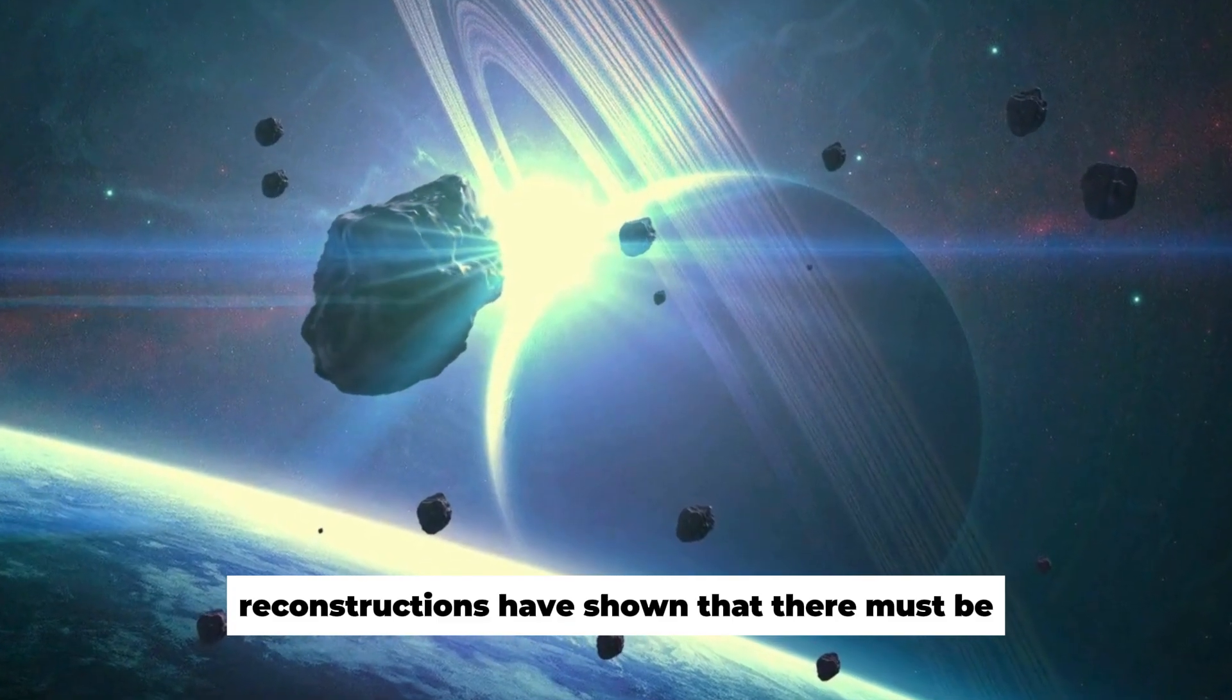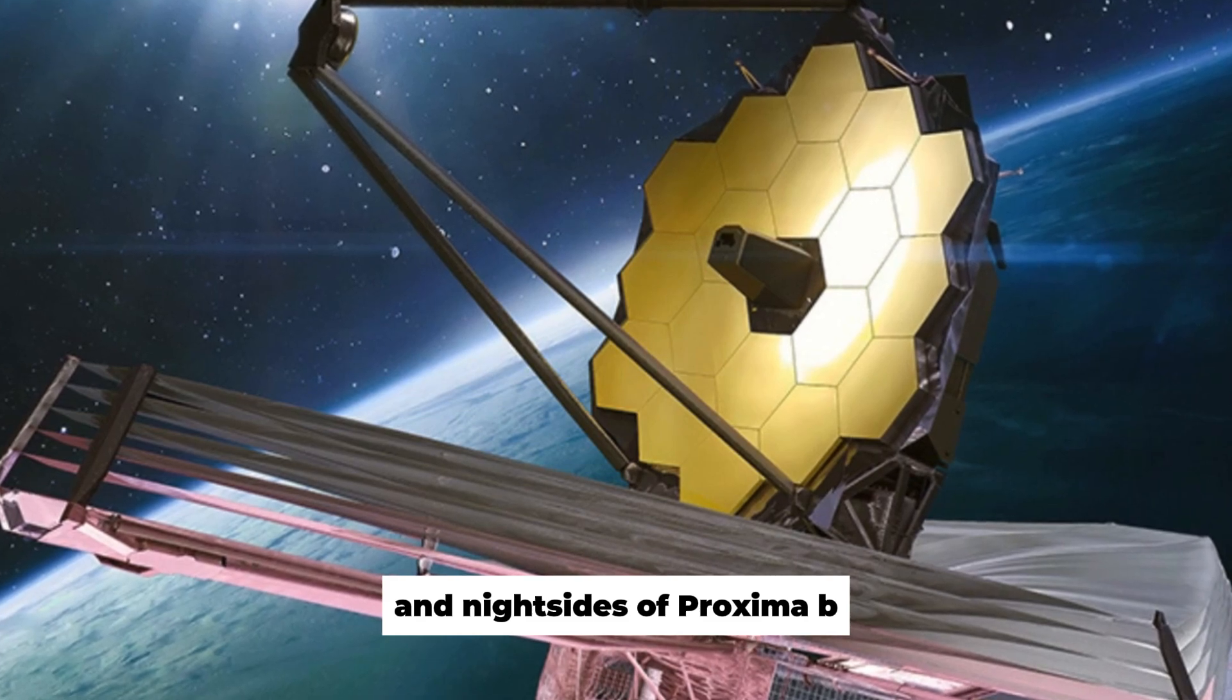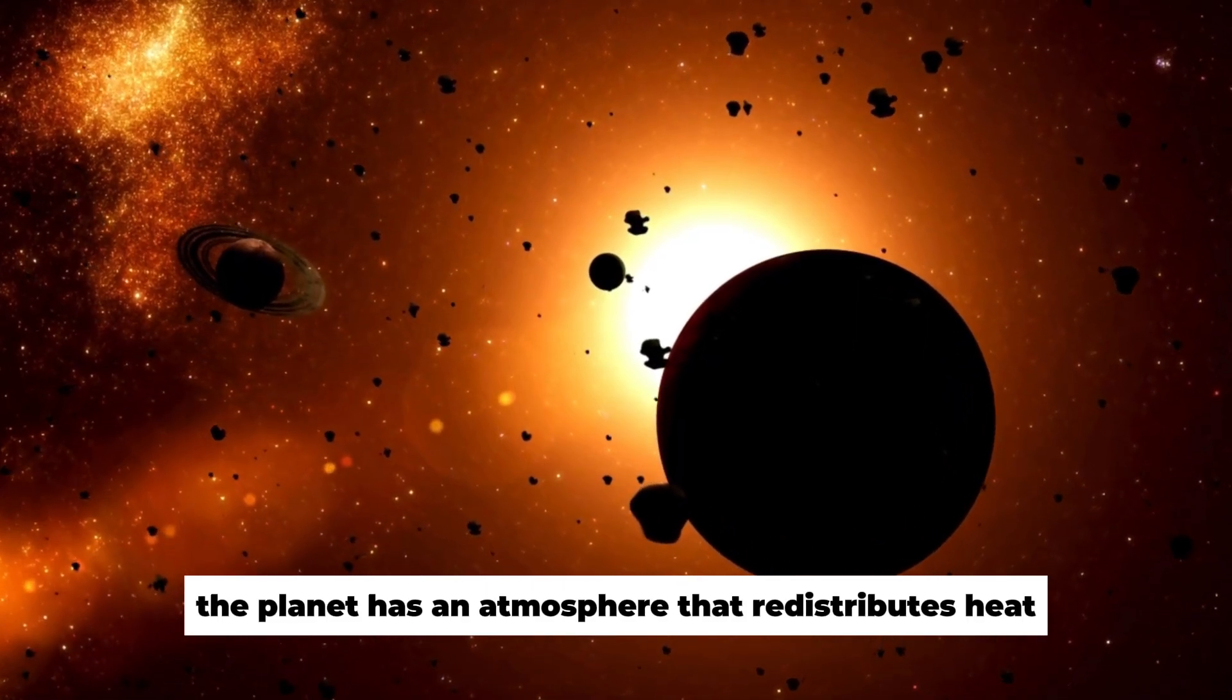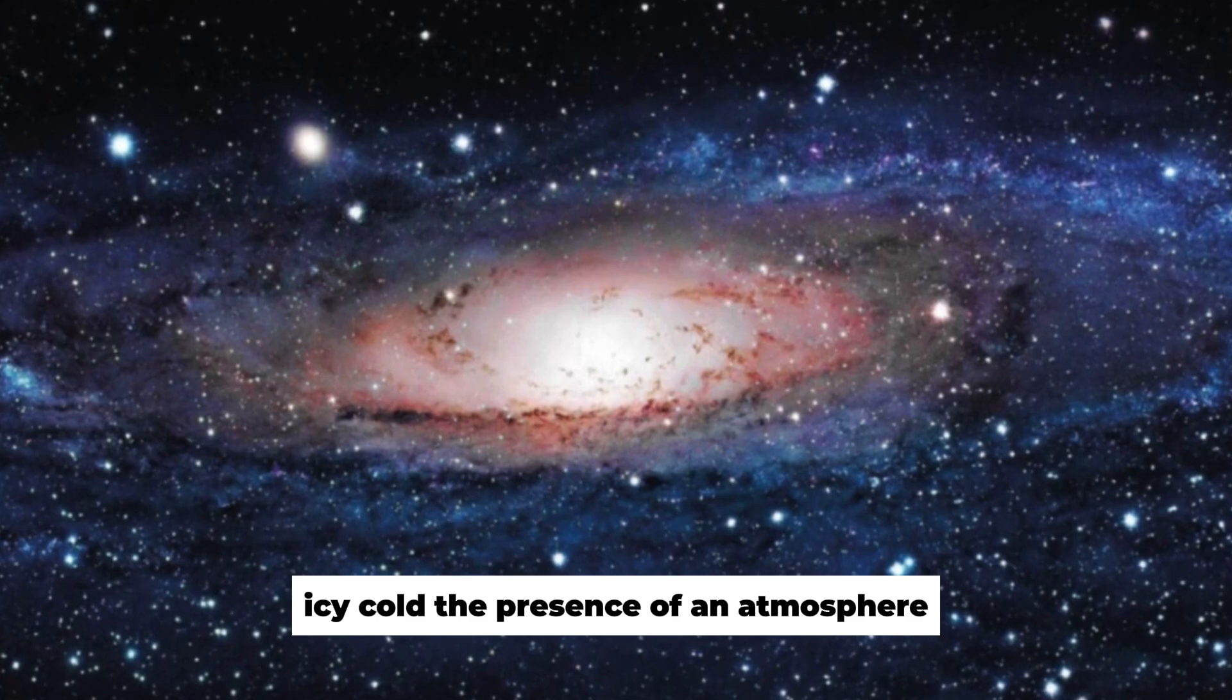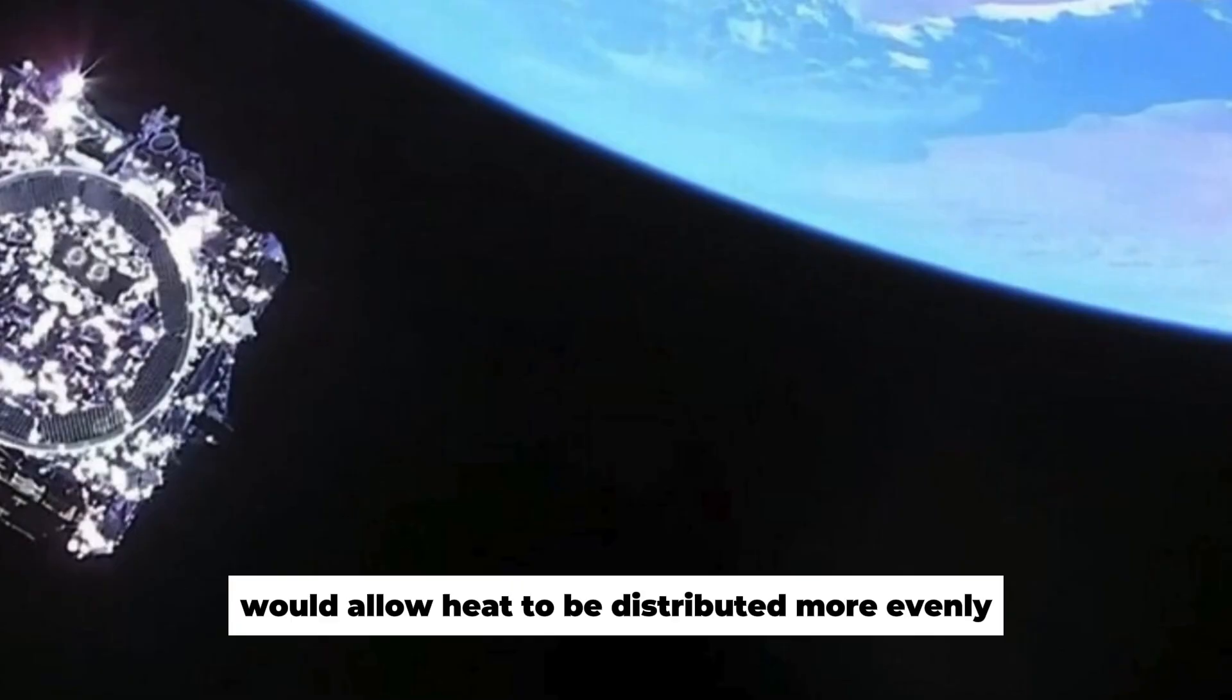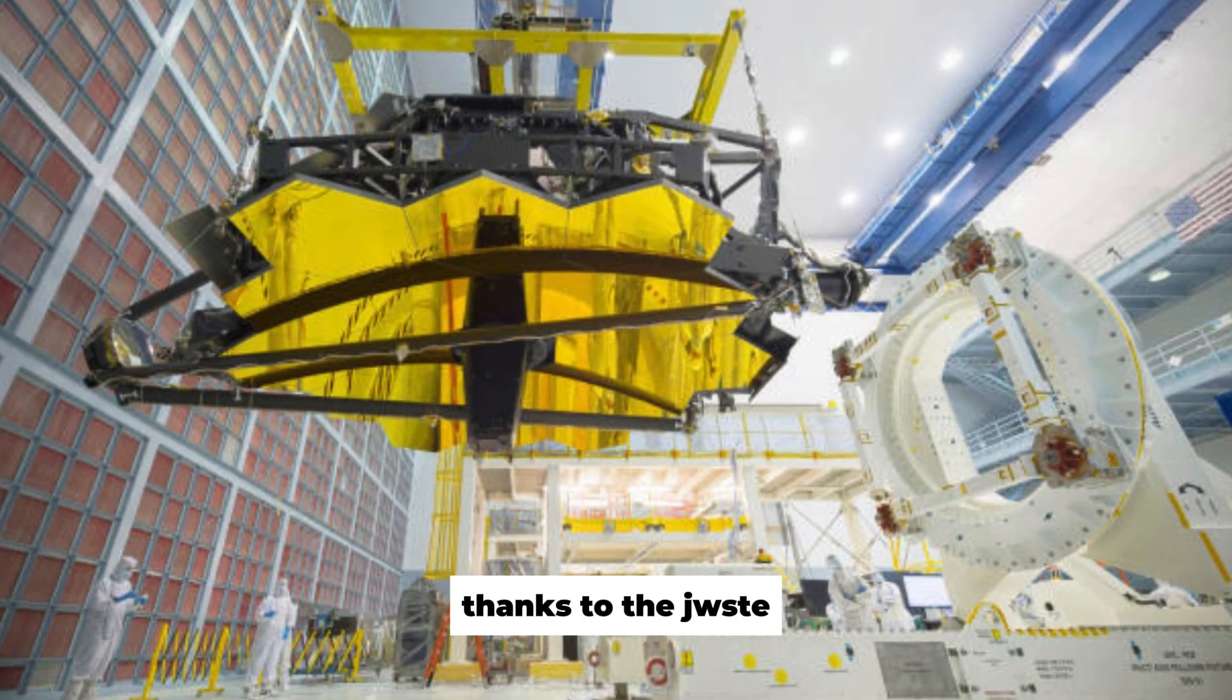Reconstructions have shown that there must be extreme temperature differences between the day and night sides of Proxima b. Unless the planet has an atmosphere that redistributes heat, without an atmosphere, the day side would be blazing hot and the night side icy cold. The presence of an atmosphere, on the other hand, would allow heat to be distributed more evenly. And this is exactly what we can now find out thanks to the JWST.